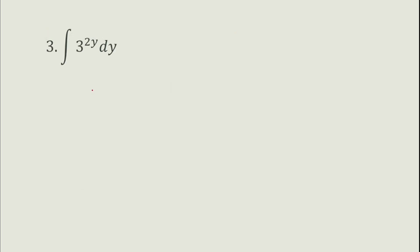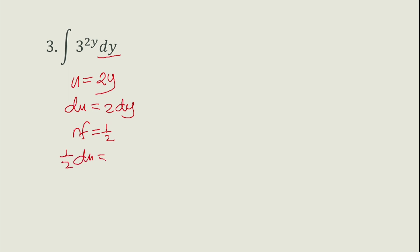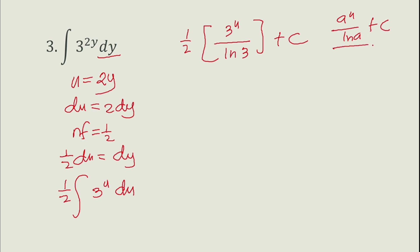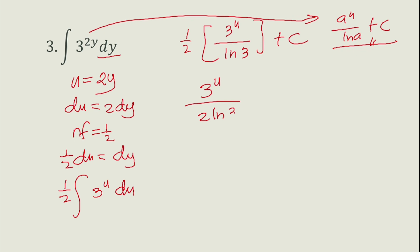Number three uses formula i6. Let u equal 2y, so du equals 2 dy. Since we need only dy, the normalizing factor is one half, giving one half du equals dy. So we have one half times the integral of 3^u du. By the formula a^u over ln(a) plus c, this gives one half times 3^u over ln(3) plus c, which equals 3^(2y) over 2·ln(3) plus c.